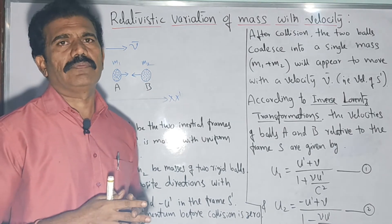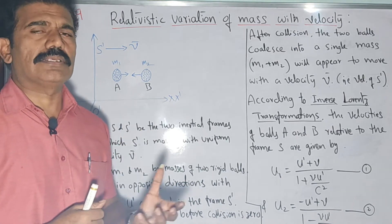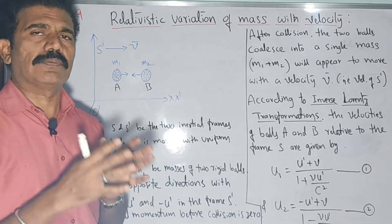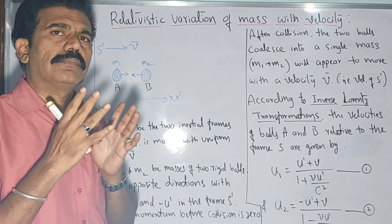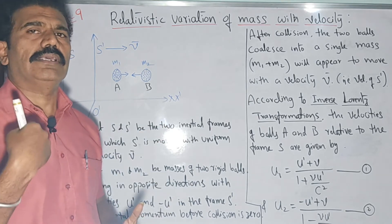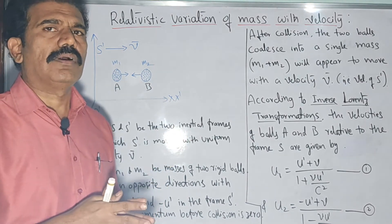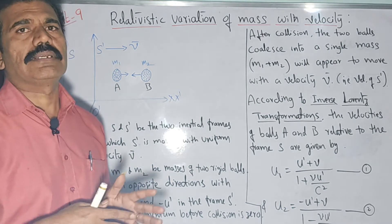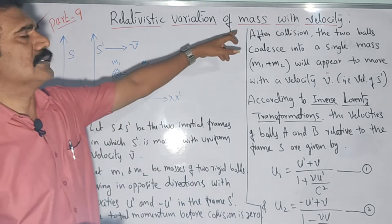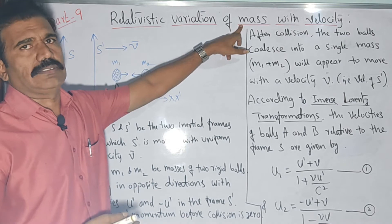According to the special theory of relativity, in which we come across the Lorentz transformation equations, one can prove that mass of a body is also a variant quantity. The relative measurement of the mass of a body is not always constant — it is not an absolute measurement. Depending upon whether the observer measures with respect to his own frame of reference or from a stationary frame, the mass can be different.